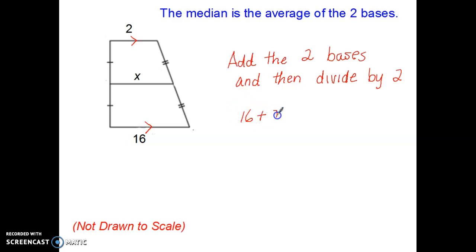So first I would add my 16 plus 2, which is 18. I divide by the number 2 because I'm averaging two numbers together. So 18 divided by 2 would be a length of 9. That means the length of my median would be 9 units long.